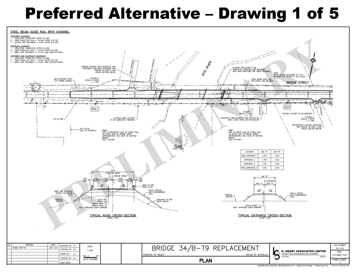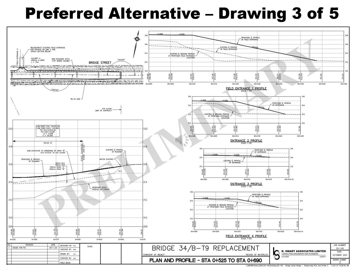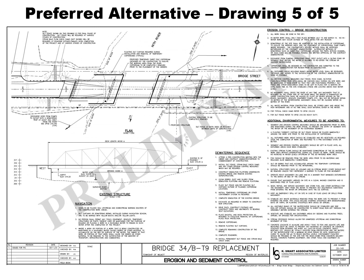Preferred Alternative, drawing 1 of 5. This is the first of 5 slides showing preliminary engineering drawings for a multi-span slab on girder bridge to replace the current bridge. This drawing is the plan view. Drawing 2 of 5 is the plan and profile view. Drawing 3 of 5 is also a plan and profile view. Drawing 4 of 5 is the general arrangement. Drawing 5 of 5 shows plans for erosion and sediment control.